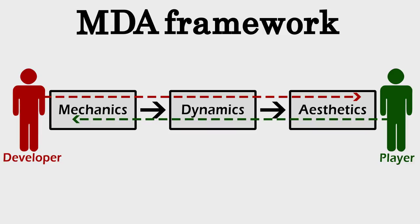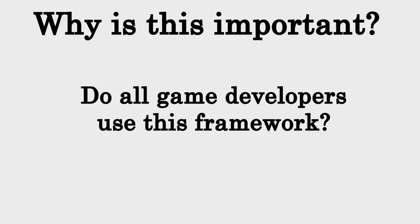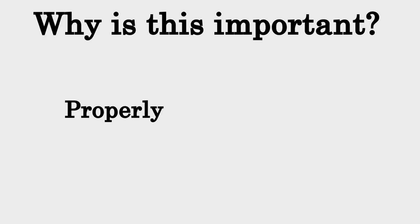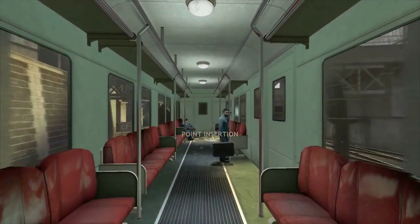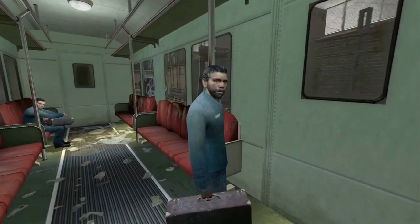A key thing to remember is that developers and players perceive games from the opposite ends of the MDA framework. Developers first need to start developing algorithms to make the mechanics of a game work, and from that they can build a player experience. On the other hand, players are directly exposed to the aesthetics of a game, and perceive games from the other end of the framework. So why is all of this important? Do all game developers use this framework to design their games? No, they don't. Its use is exactly what this series is for: properly analyzing games. To improve your skills as a designer, it is very helpful to analyze games and figure out just exactly what is fun about them, and that is precisely what I'm going to be doing with this series.